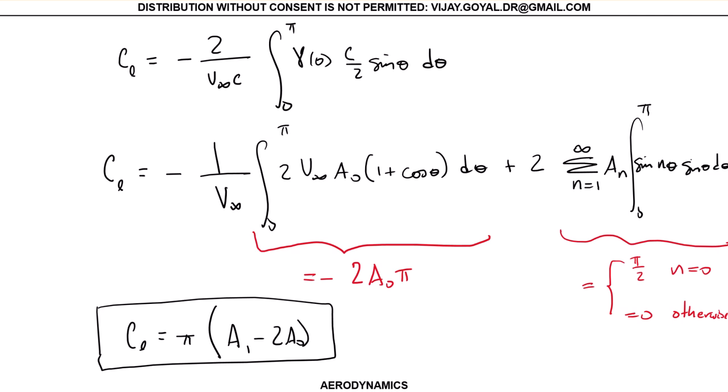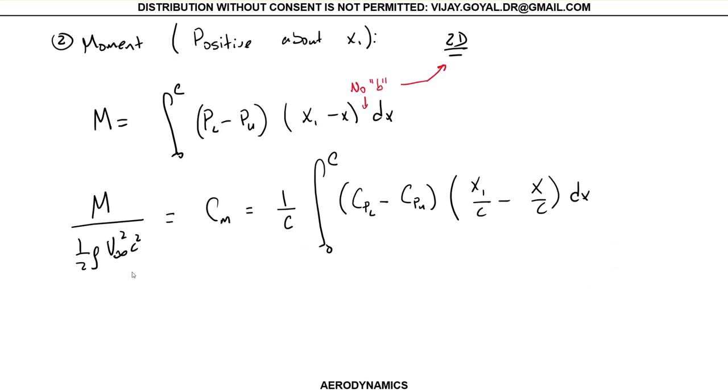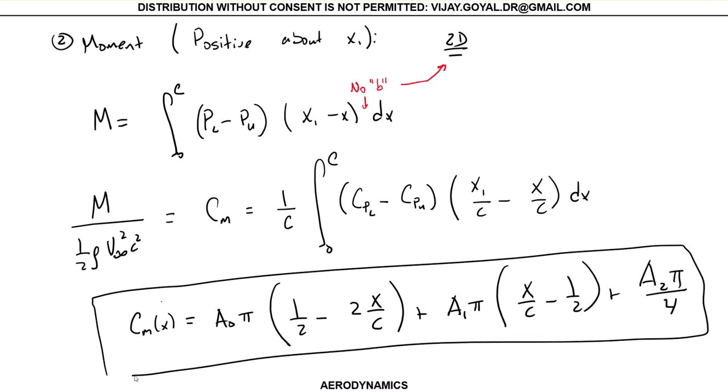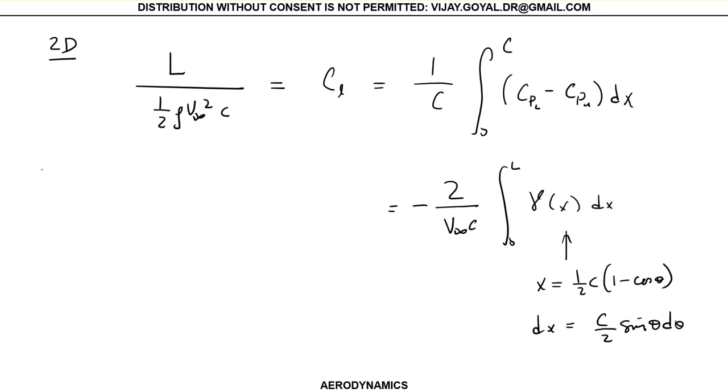Now, the moment equation. Again, know that there's no more B applied here. We did this last time. Again, we can do the same or similar substitution, and what you can show that at the end of the day, you find for two-dimensional thin wall airfoils give you the following expression: A1 pi, X over C minus 1 half, plus A2 pi over 4. So this is the fraction expression for the moment in two dimensions.